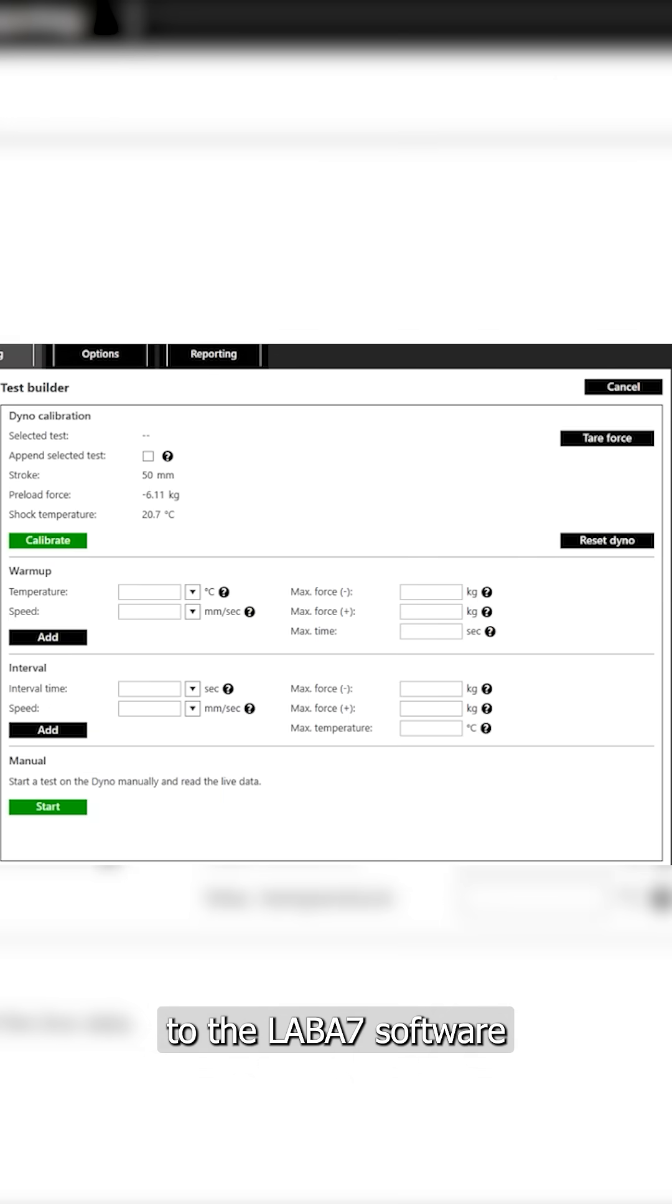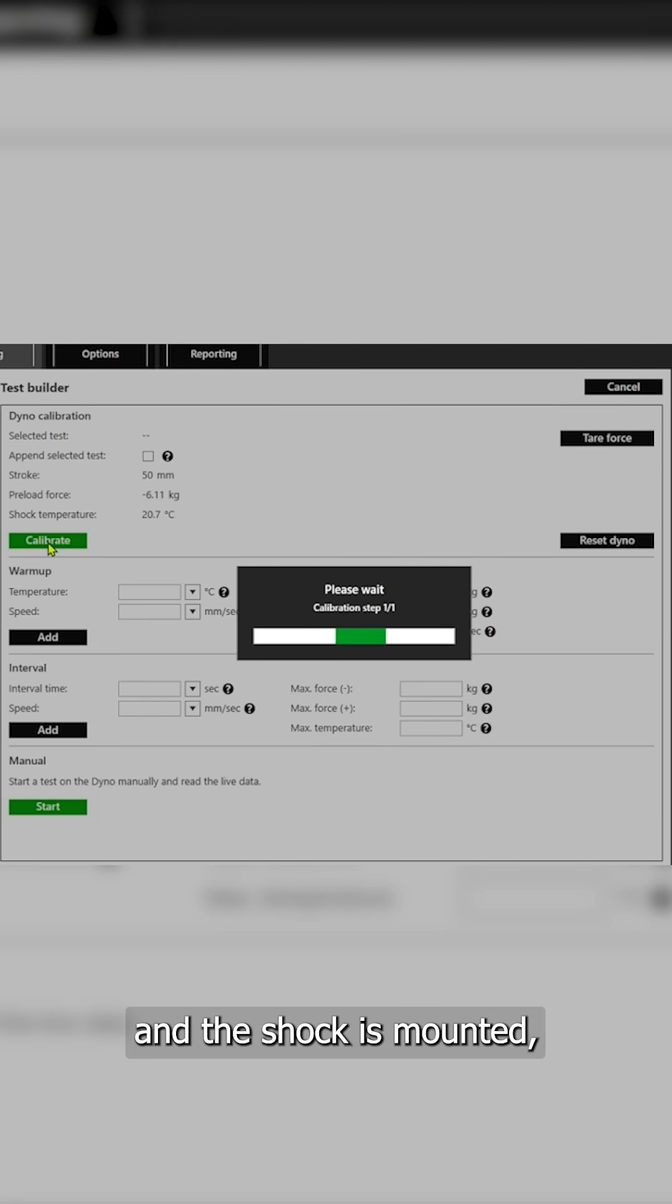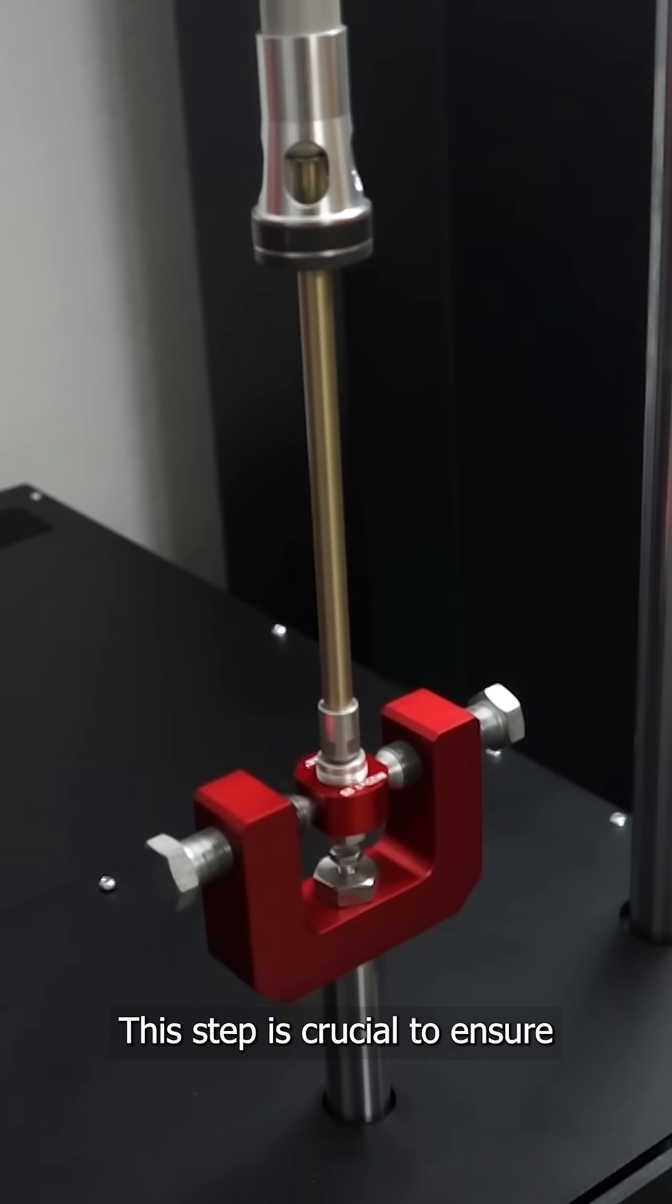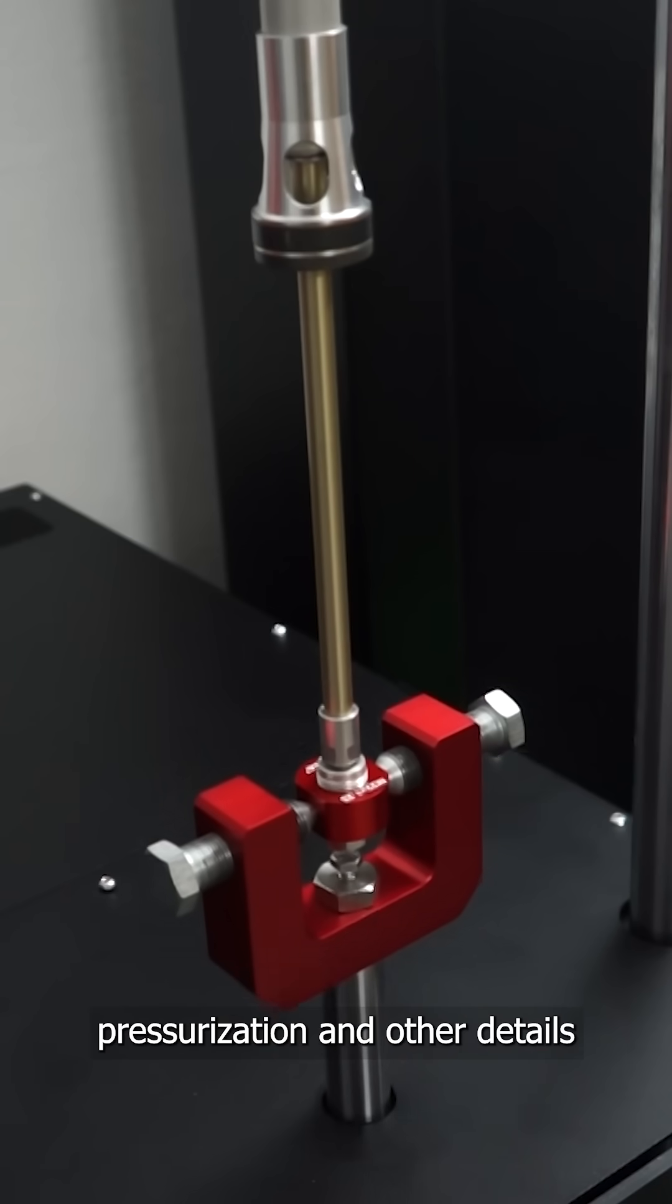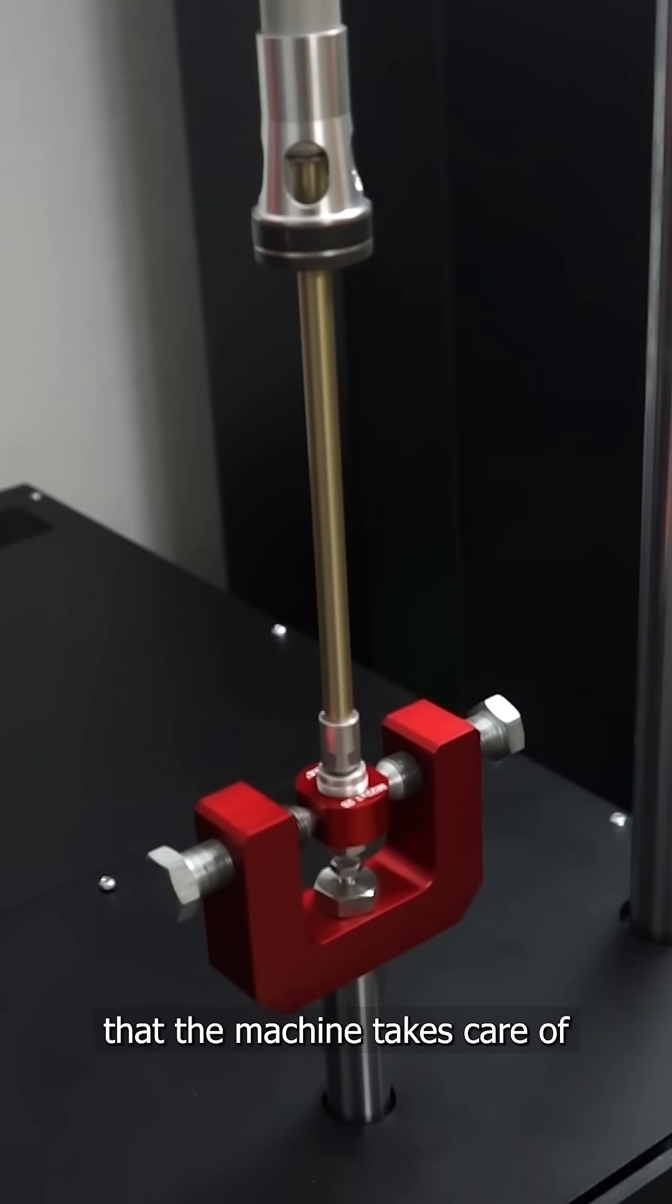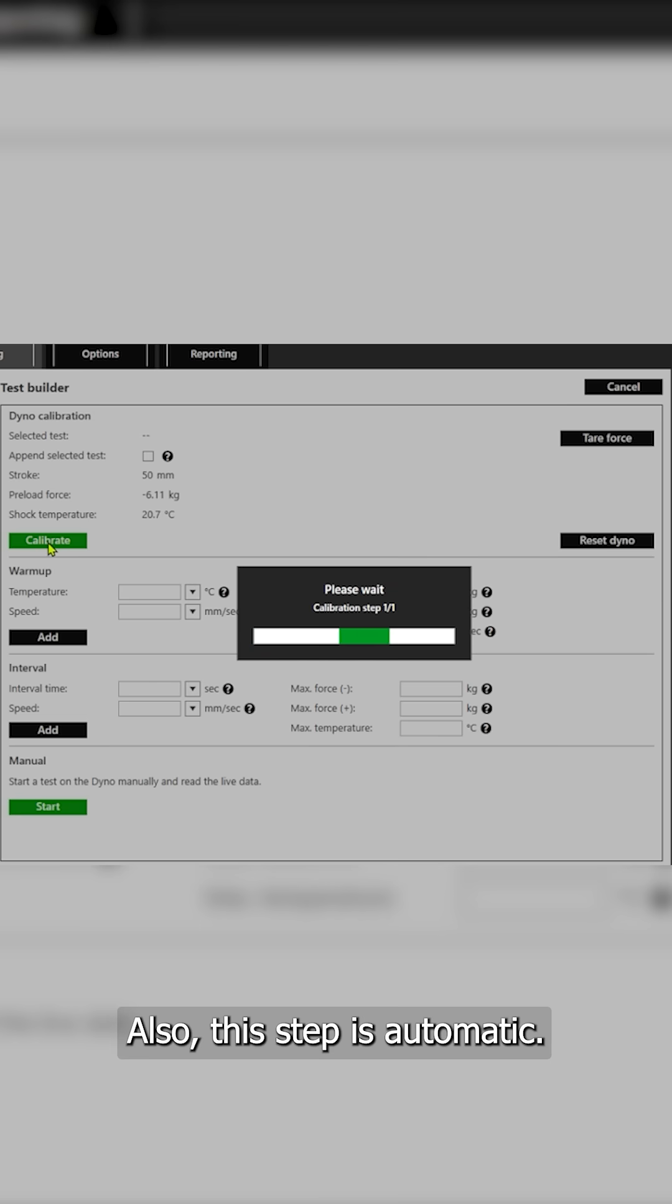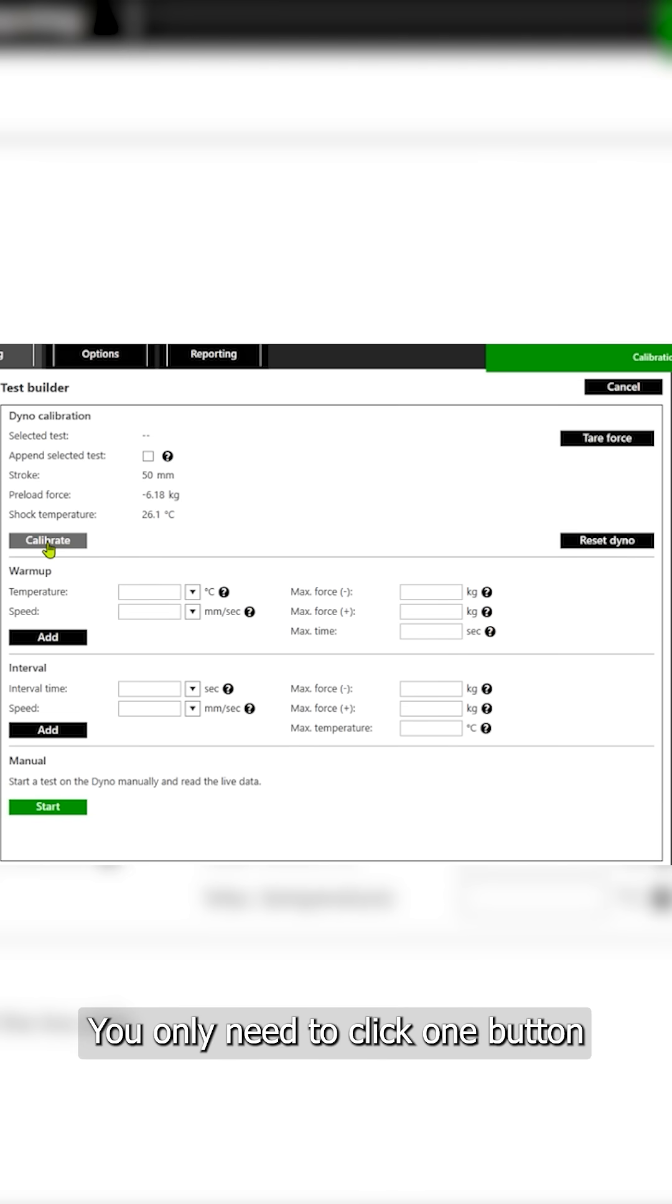Once the dyno is connected to the LAVA7 software and the shock is mounted, run calibration before each test. This step is crucial to ensure the readings are the same, taking into account the shock's pressurization and other details that the machine takes care of for you. Also, this step is automatic. You only need to click on a button.